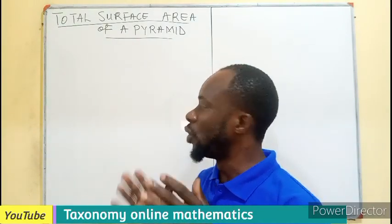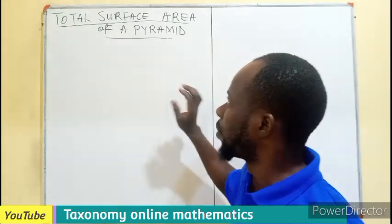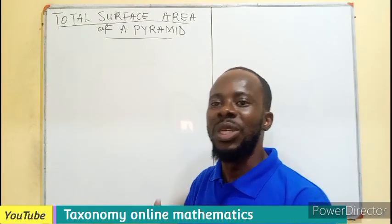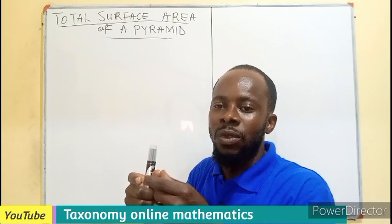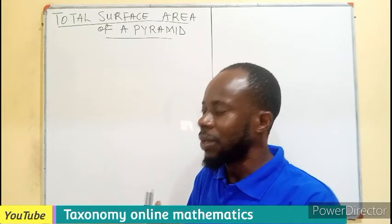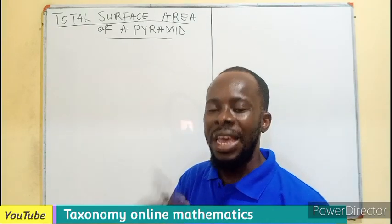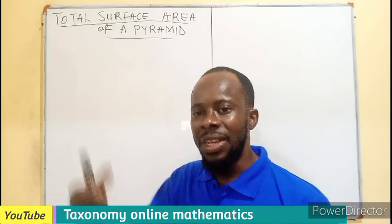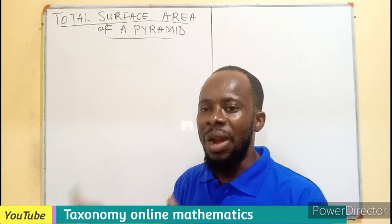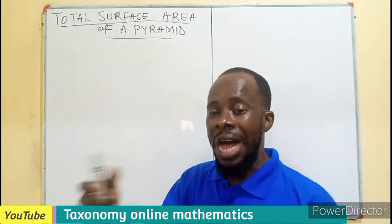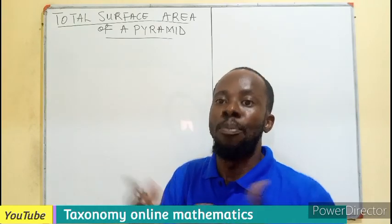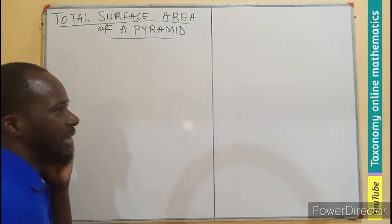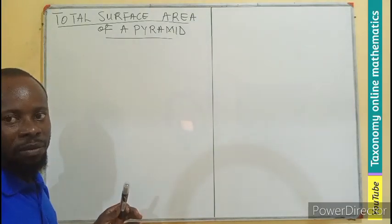When we talk of a pyramid, it is formed when the vertices of a two-dimensional shape are all joined at a particular point called the vertex, or better still the apex. The name of a pyramid is derived from its base. So you can have a square base pyramid, a triangular base pyramid, a circular base pyramid, a pentagon base, and so on. As long as the base is formed from a polygon, we can name the pyramid accordingly.